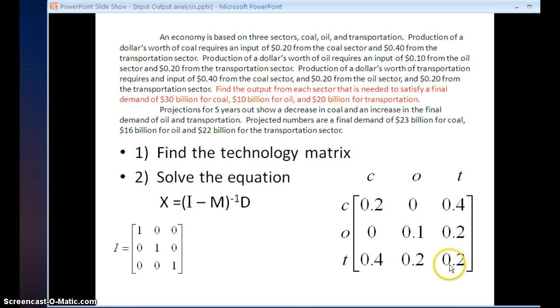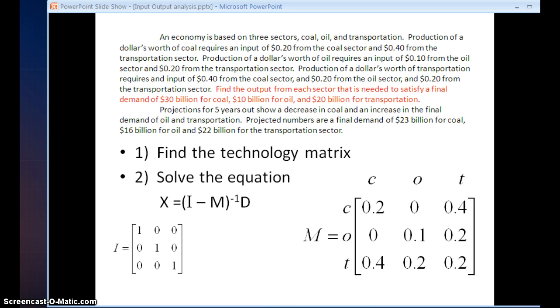Next, M stands for my technology matrix, which I already created. So just labeling that M. Finally, D is my demand matrix. So my demand in this problem, I want to keep my variables in the same order, which we are using alphabetical order. And the final demand is given in this sentence. So 30, 10, and 20. And I fill those numbers into my demand matrix. Now I have all my matrices ready, and I'm ready to use my graphing calculator to actually do the work for me.